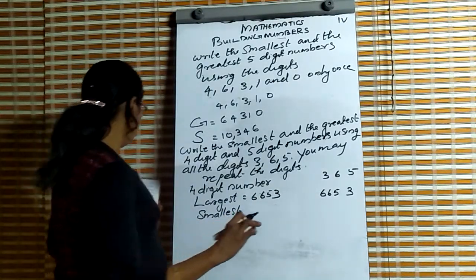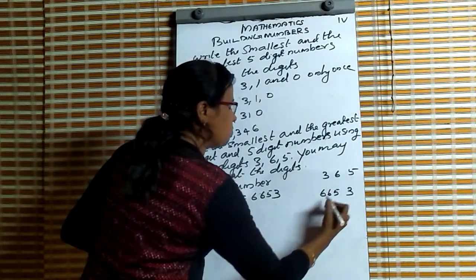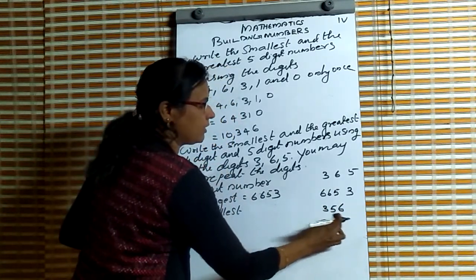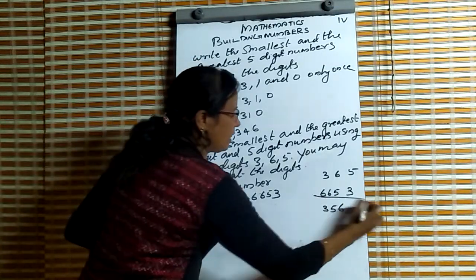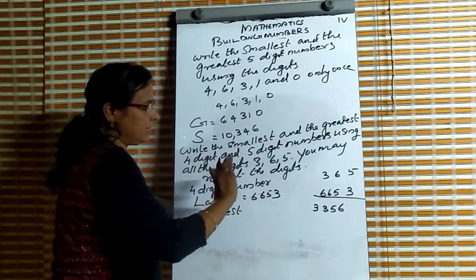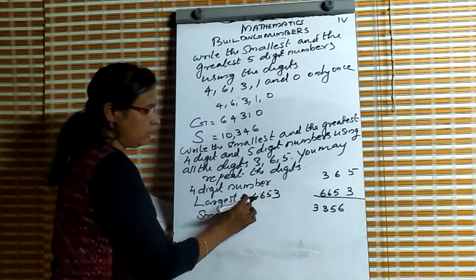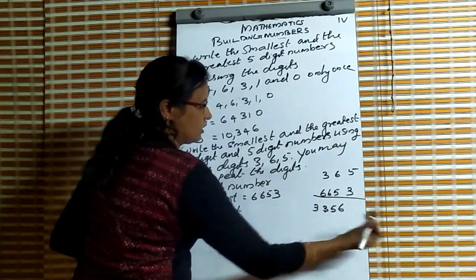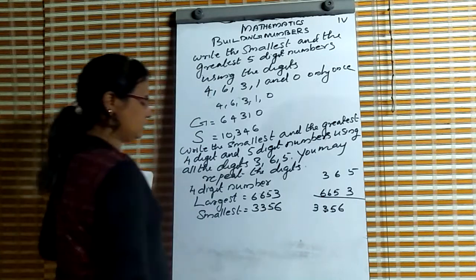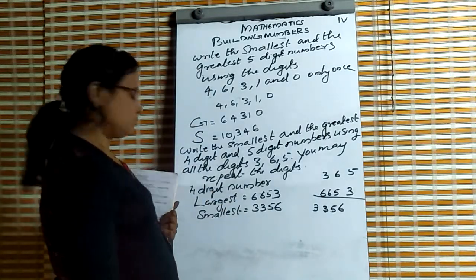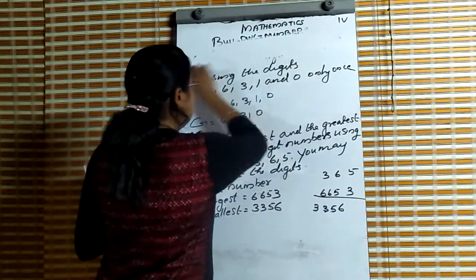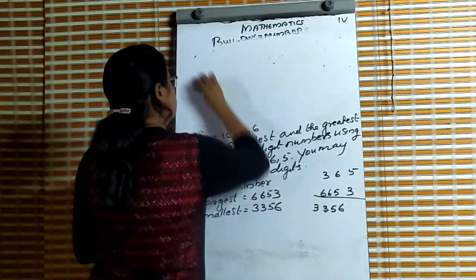And which is the smallest 4-digit number? For writing the smallest, we write 3, 5, 6 in increasing order. That gives a 3-digit number, so we repeat the smallest digit 3 to make a 4-digit number. The smallest 4-digit number is 3356.